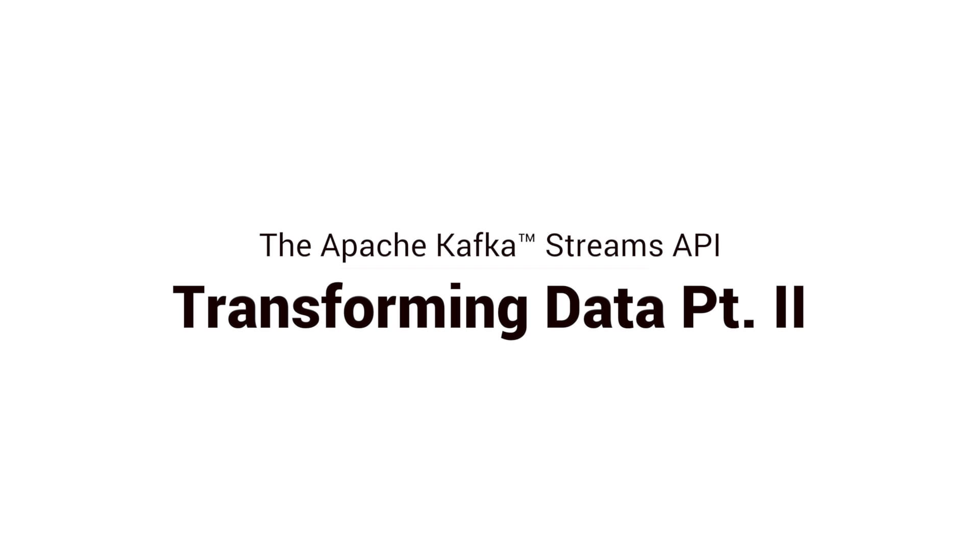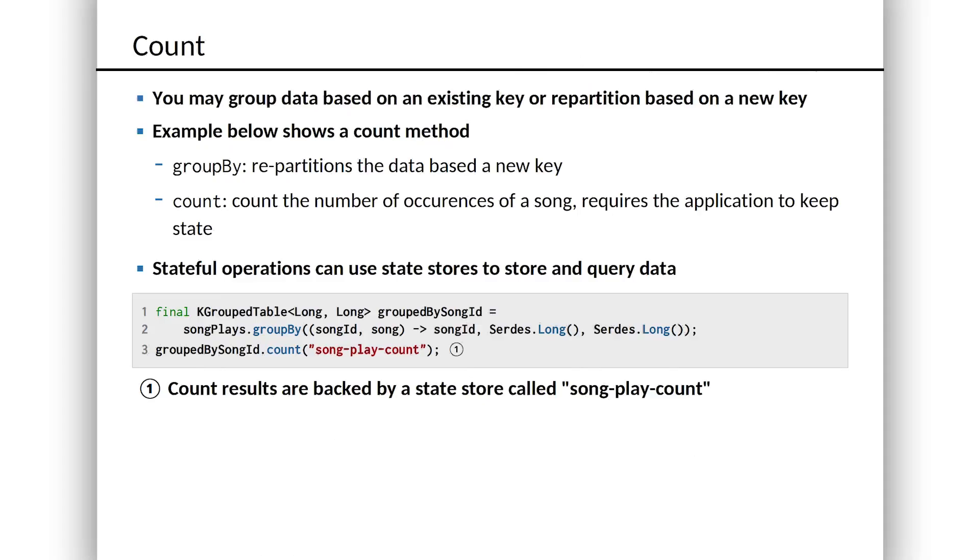Hi, I'm Tim Berglund, and this is Kafka Streams Transformations, part two. I've said a few times how a stream can be a table and a table can be a stream — there's this duality. Let's actually take a stream and make it into a table and see how this works. We're going to count elements in a stream by key. Let's look at some code.